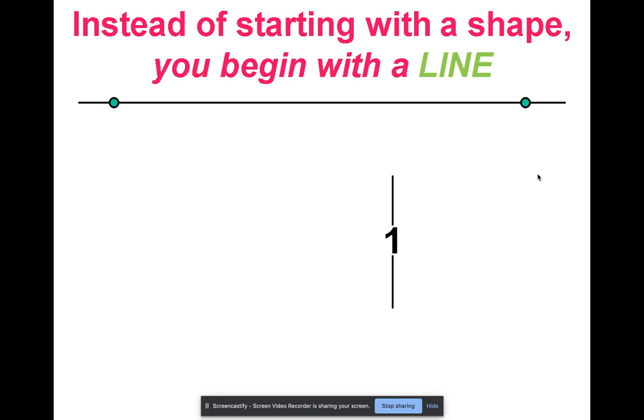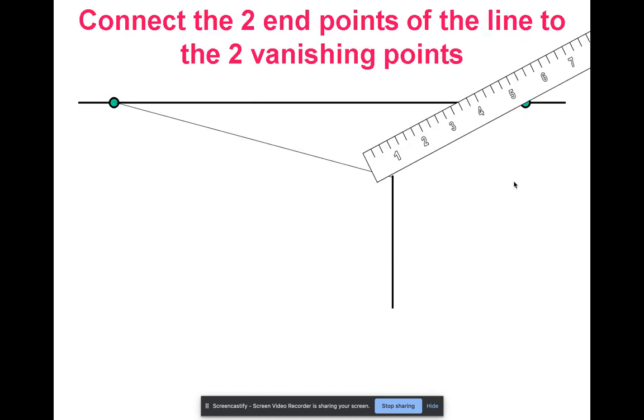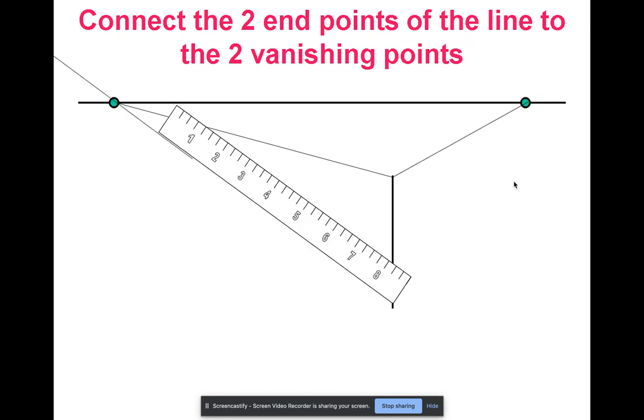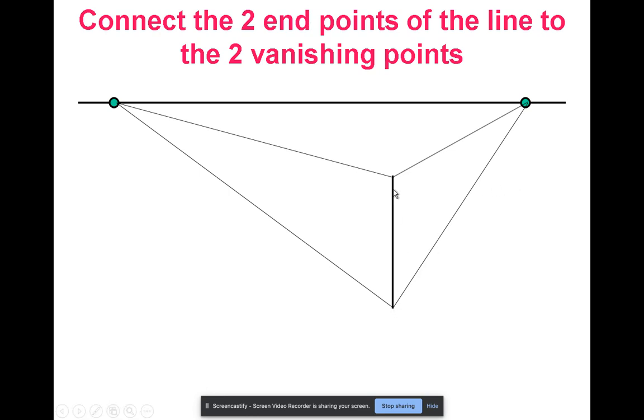Then we'll actually start with a line instead of with a shape. At the top and the bottom of that line you are going to connect your ruler back to your vanishing point and draw orthogonals going from the top and the bottom of the line back to the vanishing point on both sides.